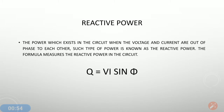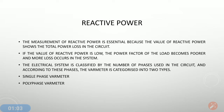The formula which measures the reactive power in the circuit is Q = VI sin φ. The measurement of reactive power is essential because the value of reactive power shows the total power loss in the circuit. The total power flowing in the circuit is the total power minus the active power, since active power is the only useful power and total power includes reactive power also. So by calculation of reactive power, we can find out the total loss in the circuit.